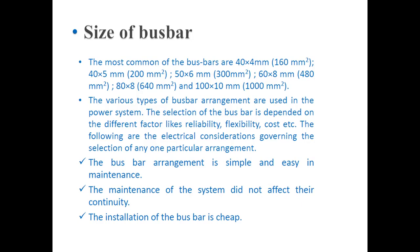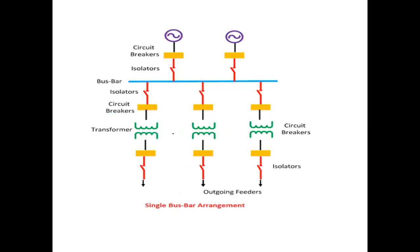The bus bar arrangement chosen should allow easy maintenance without affecting continuity of supply. Different types of bus bar schemes include: single bus bar scheme, single bus bar with sectionalizing switches, double bus bar, double breaker, main and transfer bus scheme, double bus single breaker scheme, and ring bus scheme. The choice depends on cost, safety, reliability, sub-transmission voltage level, and substation location.